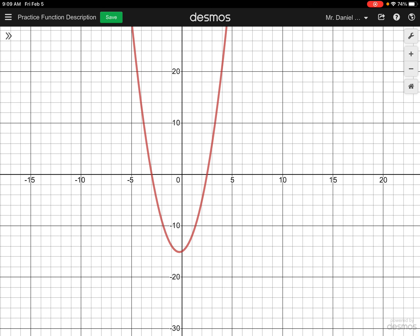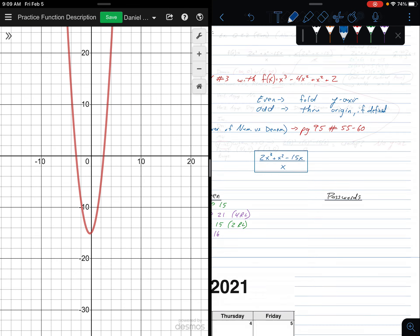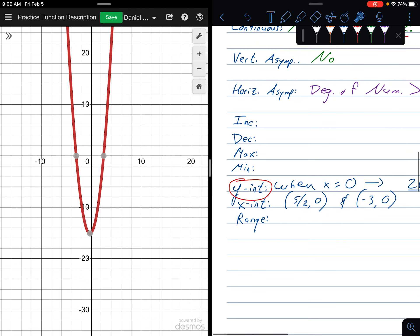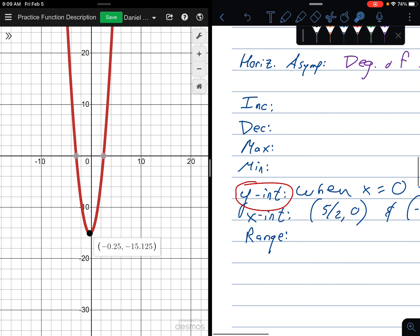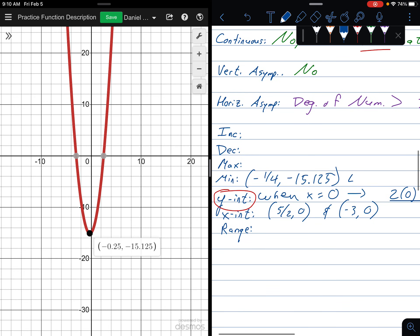Looking at my graph, I'm increasing to the right all over here, to the right of that point labeled on the bottom, and I'm decreasing to the left of that point on the bottom. This point on the bottom is my minimum. My minimum is that point right there. My minimum is this X value, negative 1 quarter comma negative 15.125. That's 15 and an eighth, but I'll leave it like that. That's my minimum.